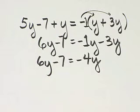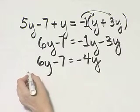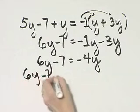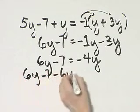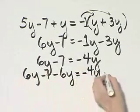Let's subtract 6y from both sides so that I'll have all my variable terms on one side. So I'll write down the left side and then I'll subtract 6y. I'll write down the right side and subtract 6y.